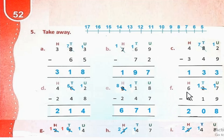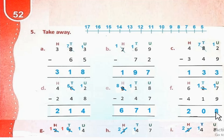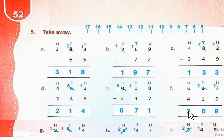Part F: 627 minus 419. 7 से 9 minus नहीं होता। So हम 1 ten borrow करेंगे — यहाँ से 1 ten लेंगे तो यह 1 रह जाएगा, और यह 17 हो जाएगा। 17 minus 9 = 8. 1 minus 1 = 0. 6 minus 4 = 2. So the answer is 208.